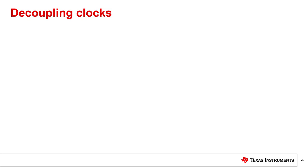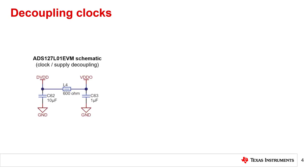In a previous Precision Labs module, we discussed how certain active components such as clocks can introduce large transients into a power supply. The image on the left shows a portion of the ADS127L01 EVM schematic that includes the decoupling components used by the ADC and clock fan-out buffer. This buffer must be referenced to the same digital I/O level as the ADS127L01 digital supply, DVDD, which may allow switching transients to couple onto the sensitive supply. To maintain system performance, the EVM uses capacitors and a ferrite to decouple DVDD from the fan-out buffer output supply, VDDO. The ferrite is highlighted in yellow in the image on the left.